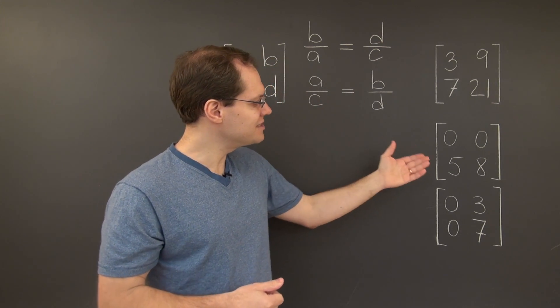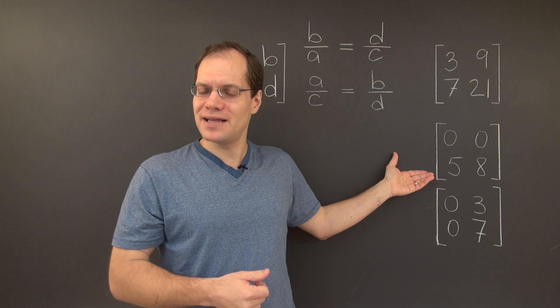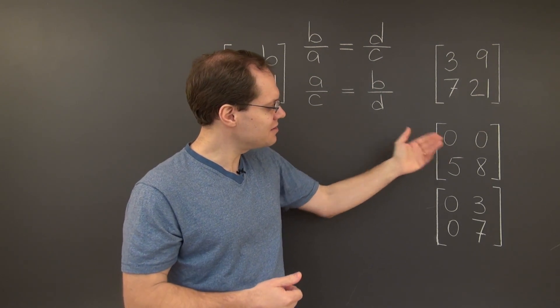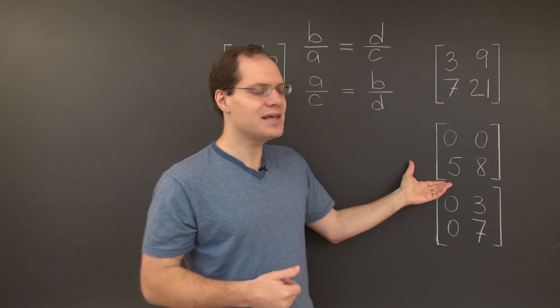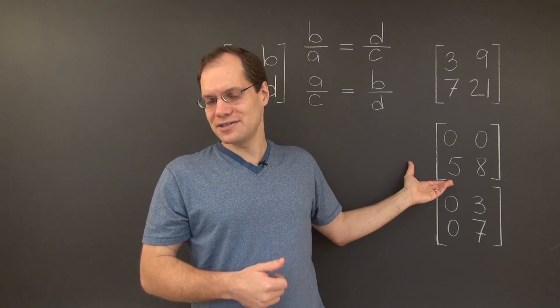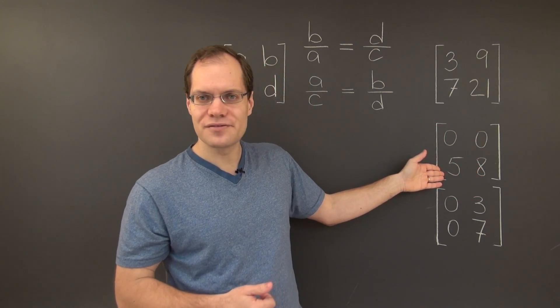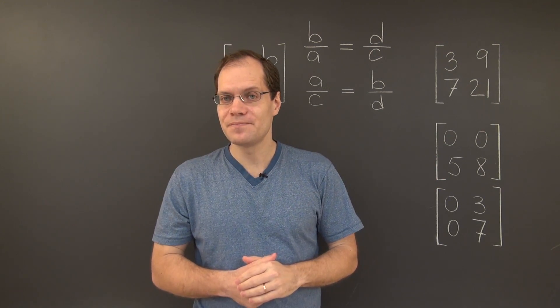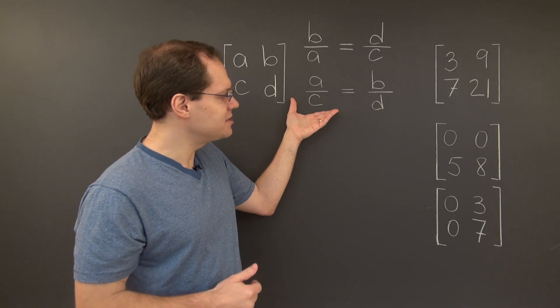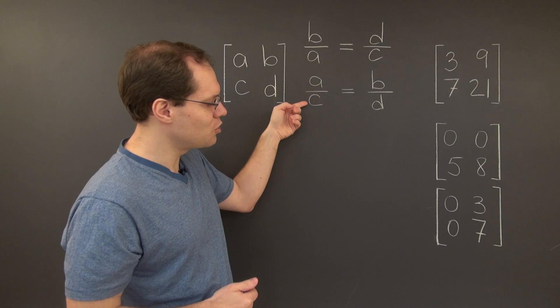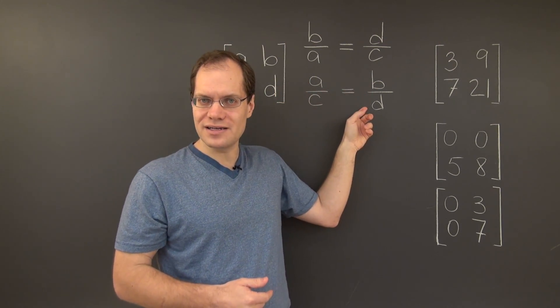They fail if there is a 0 in an inconvenient place in the matrix. Consider this matrix for example. Its columns are linearly dependent because the second column is 8 fifths times the first column.